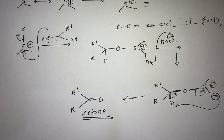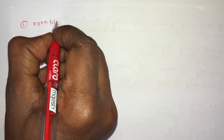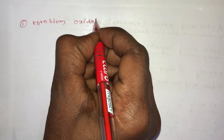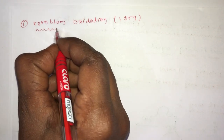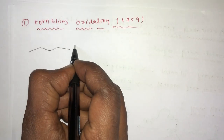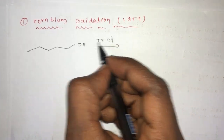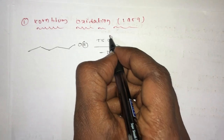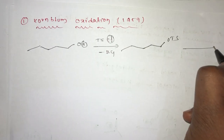In the same way, there is one more related reaction — the first one is the Kornblum oxidation reaction. This is also a DMSO-containing reaction, discovered in 1959. In this reaction mechanism, we first take a primary alcohol and treat it with TsCl, so HCl leaves and we get OTs. Then this is treated with DMSO.